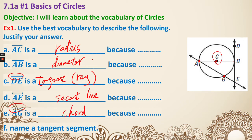Next, name a tangent segment. Be careful - we're naming a segment, which means you need to find the endpoints. We have a couple of options: it could be DE, or it could be BE. All of these line segments actually only touch the circle at one point.